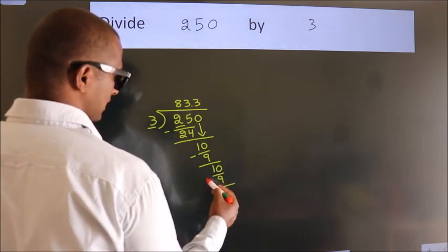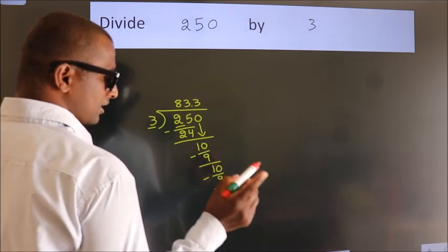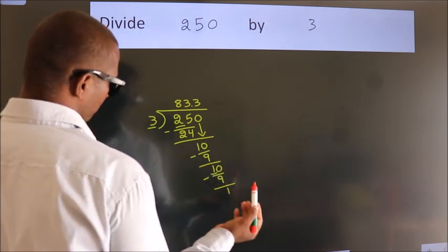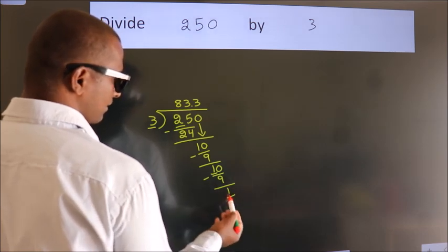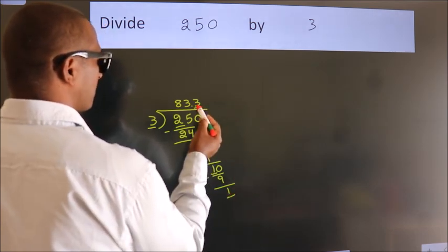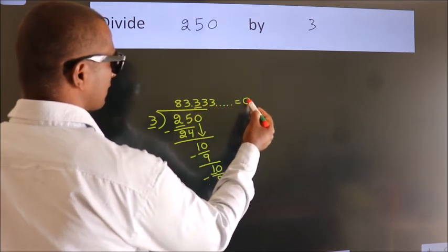Now we subtract, we get 1. Now you observe, we had 1 here and we got 1 again. That means this number keeps repeating. So this is our quotient.